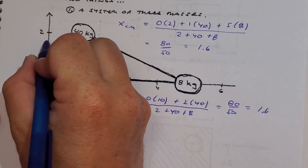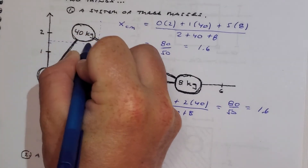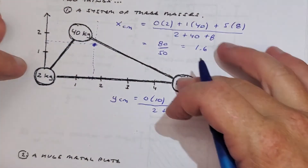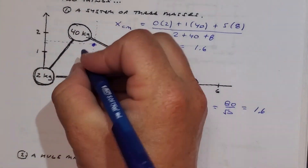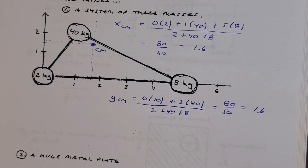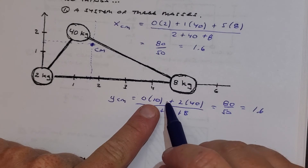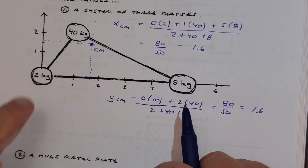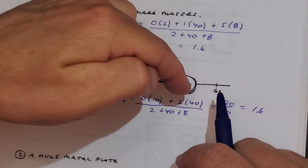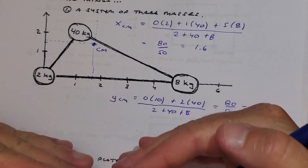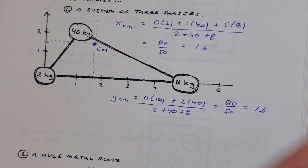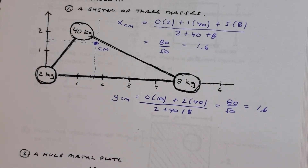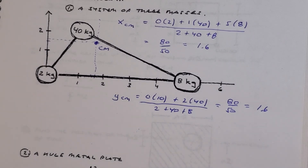It turns out we get 80 over 50 again — a little bit of a coincidence — which is still 1.6. So if you go up 1.6, our center of mass is right there. If you chucked this whole mass into the air, it would rotate around that point, which is the center of mass. Something that might have tripped people up: going object by object, position 0 is worth 2, position 2 is worth 40, and position 0 is worth 8 — effectively the same as saying position 0 is worth 10. That's why there were only two terms. Just another look at finding the center of mass of a more 2D object.